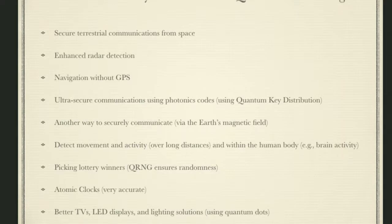We've seen systems pick lottery winners — imagine if you had three billion tickets and had to pick three million winners. A quantum random number generator ensures randomness and makes it happen very quickly. I've seen and know people building atomic clocks, which are the most accurate technology the human race has ever developed. And lastly, but important for our Chicago Bears, better televisions, LED displays, and lighting solutions using quantum dots.